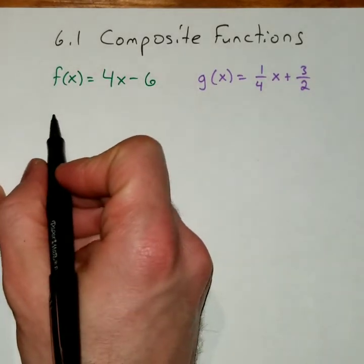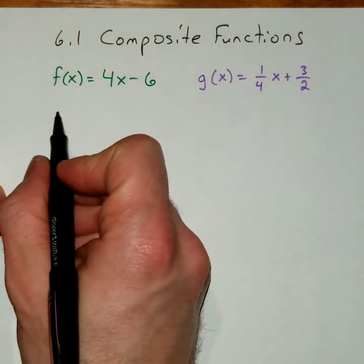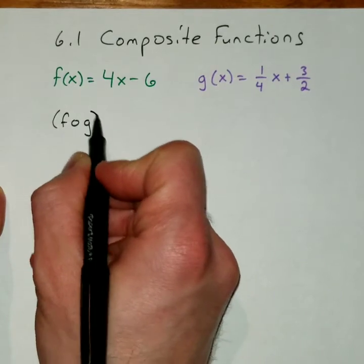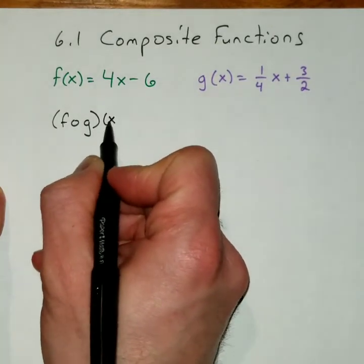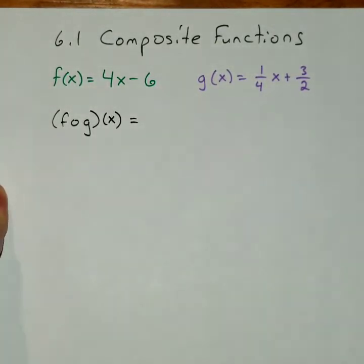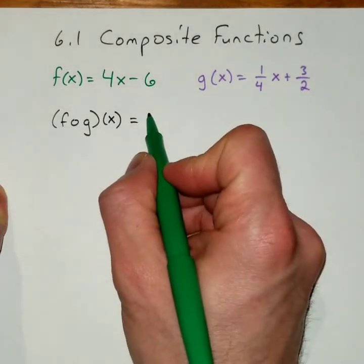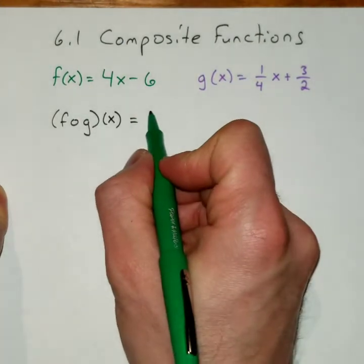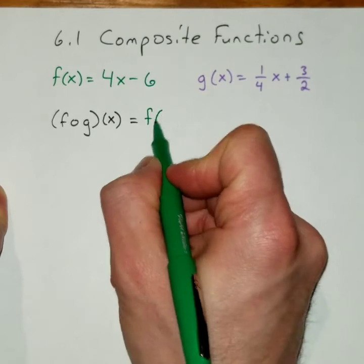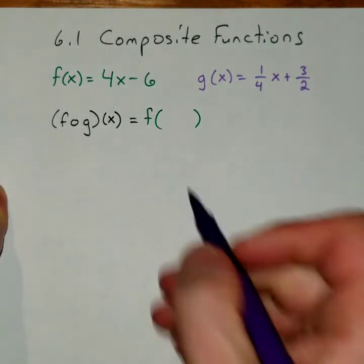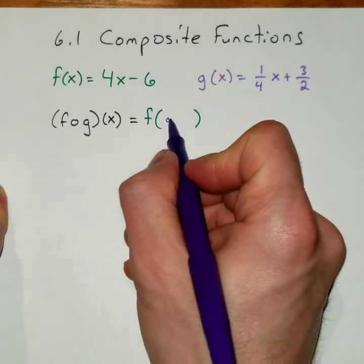We're going to start off by finding f composed with g of x. The f is on the outside, so we're going to start that first. Let's do f on the outside, and then g of x goes on the inside.